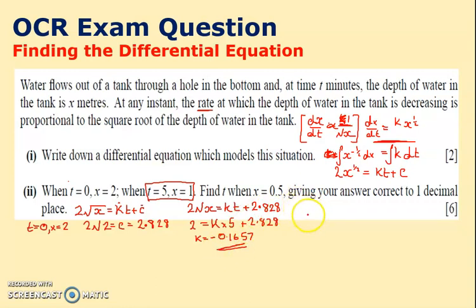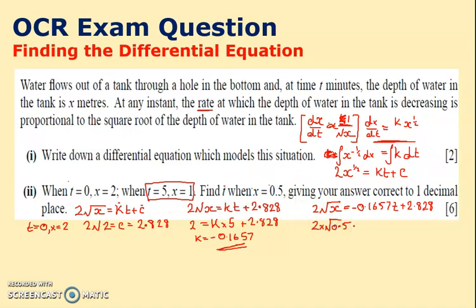The equation is now 2√x equals −0.1657t plus 2.828. To find t when x equals 0.5: 2 times √0.5 equals −0.1657t plus 2.828. Rearranging and dividing gives t approximately 8.53 minutes.